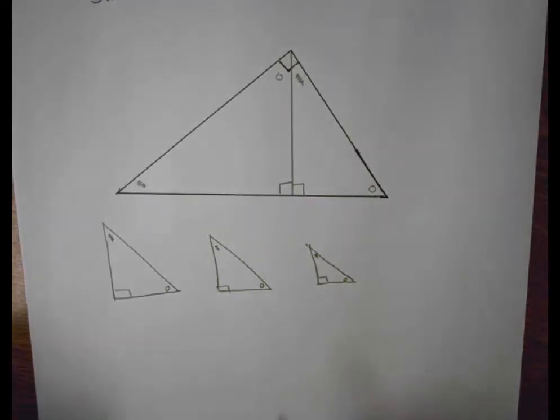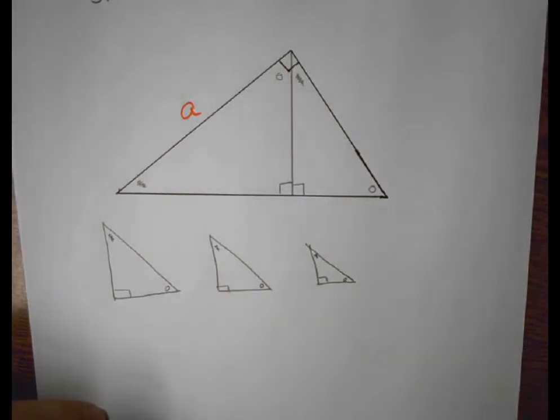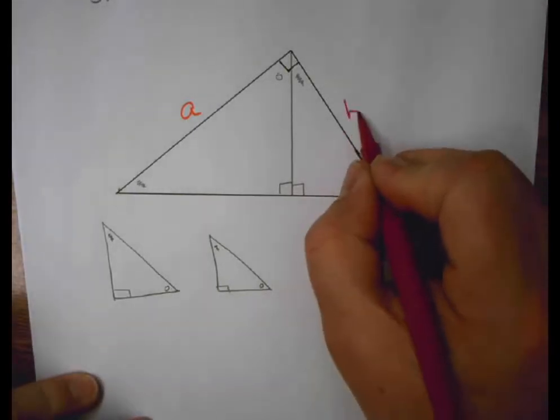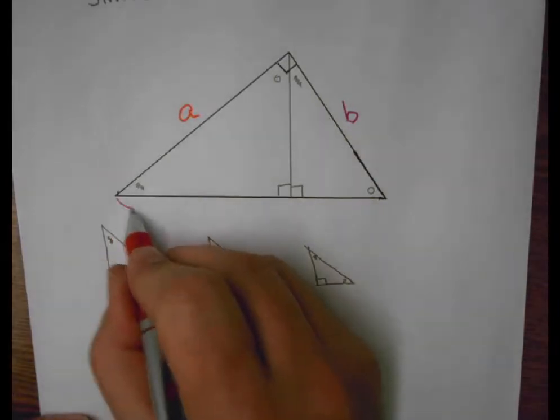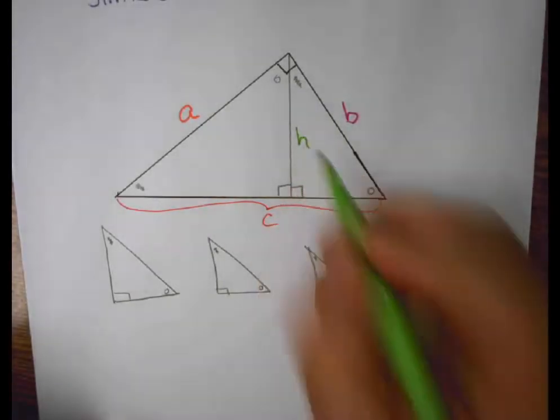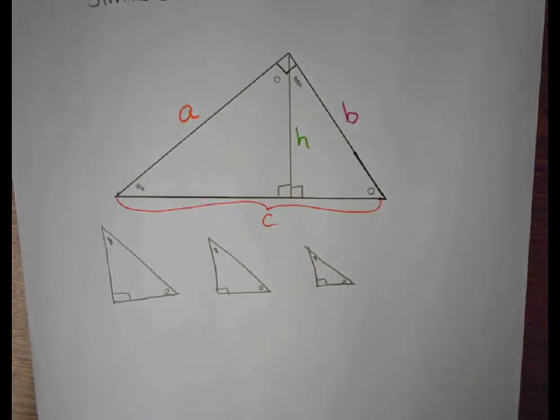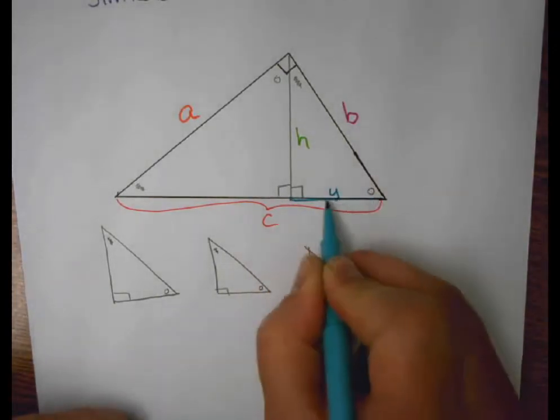So to begin with, let's label this side A, and this side B, and this whole side C. And then I also need to bring in some other little parts here. Let's call this H, because that's the altitude or the height. And we'll call this side Y, and we'll call this little segment from here to here Y.